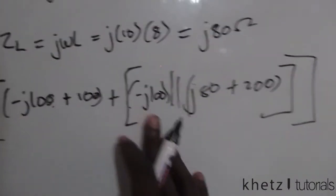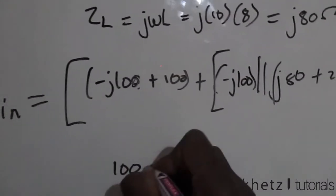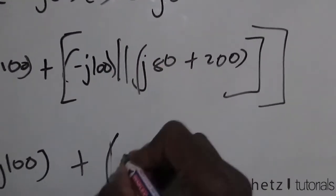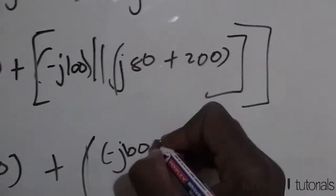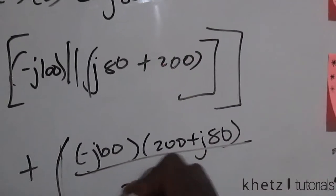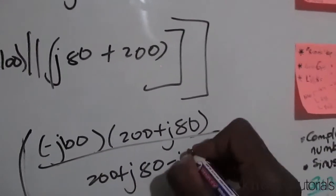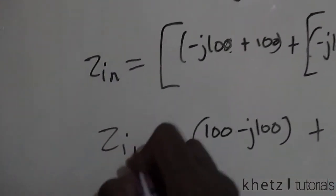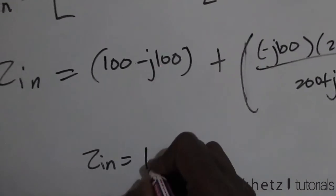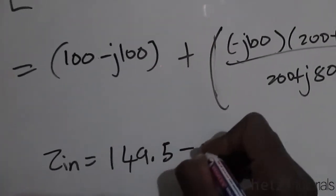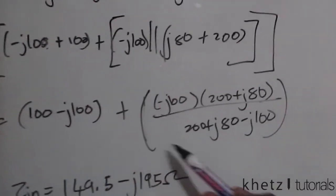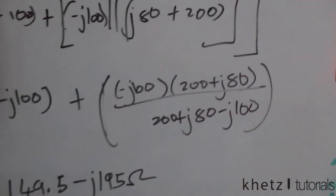Simplifying: we have negative j100 added to the quantity negative j100 multiplied by (200 + j80), divided by (200 + j80 minus j100). This is our input impedance expression. After punching all of this into the calculator, the answer is 149.5 minus j195 ohms.